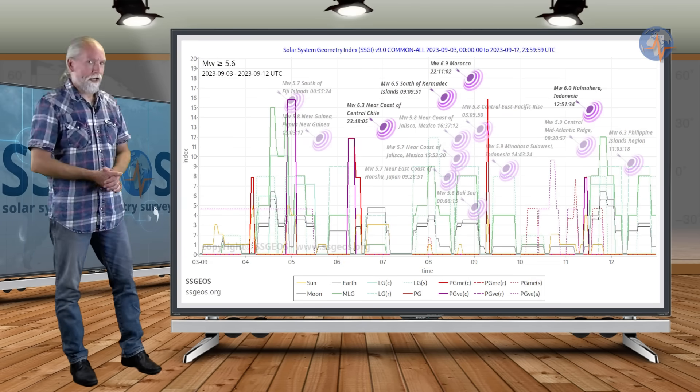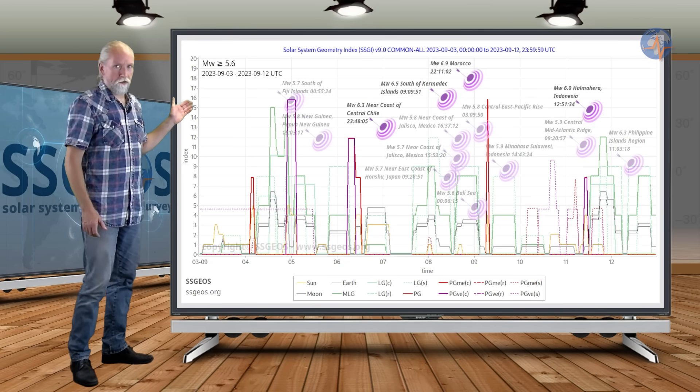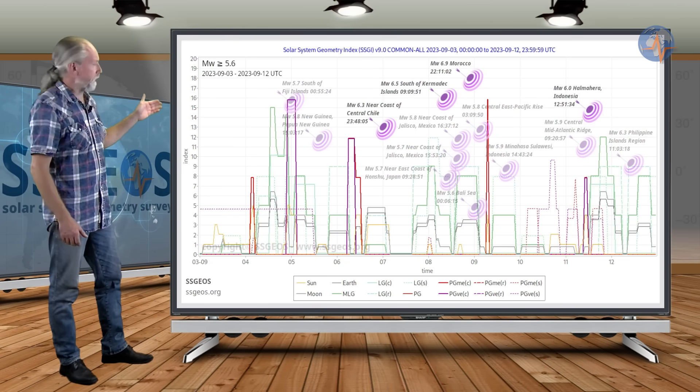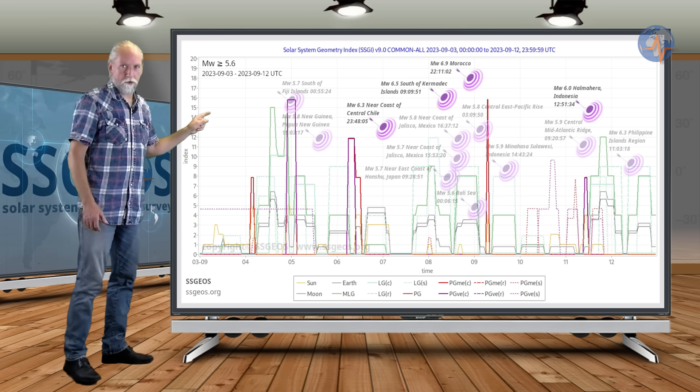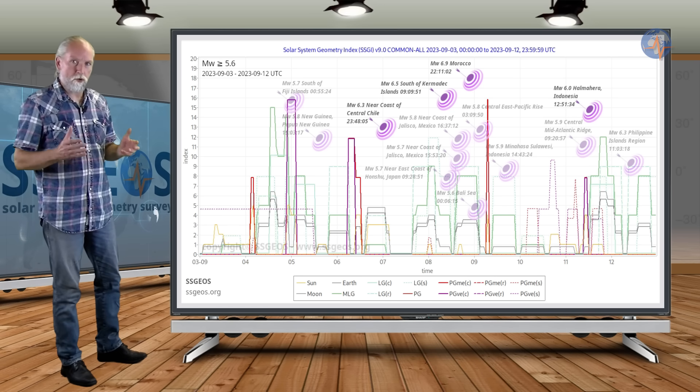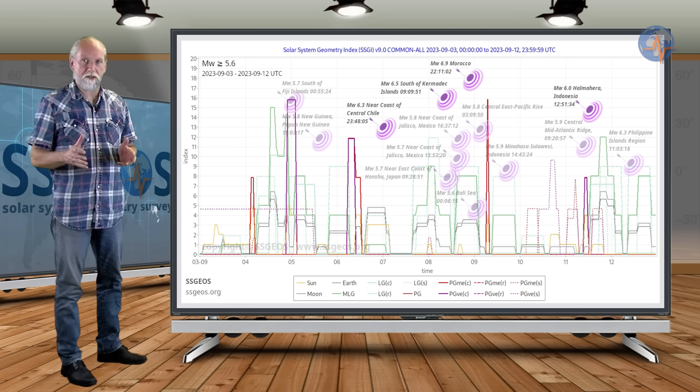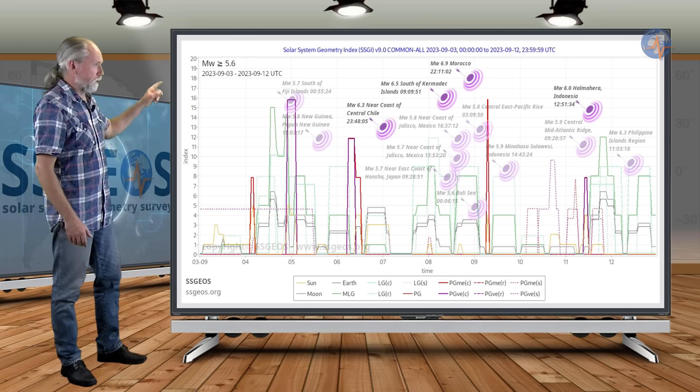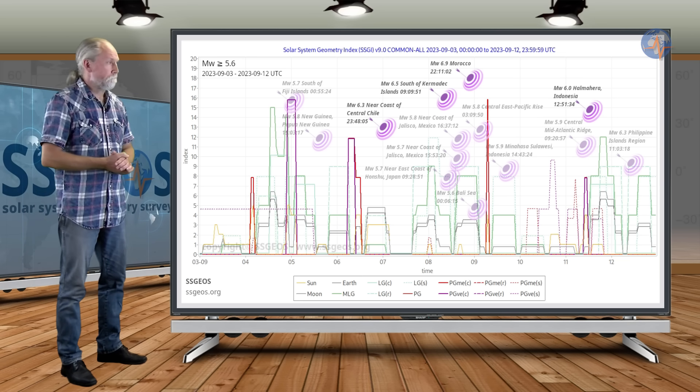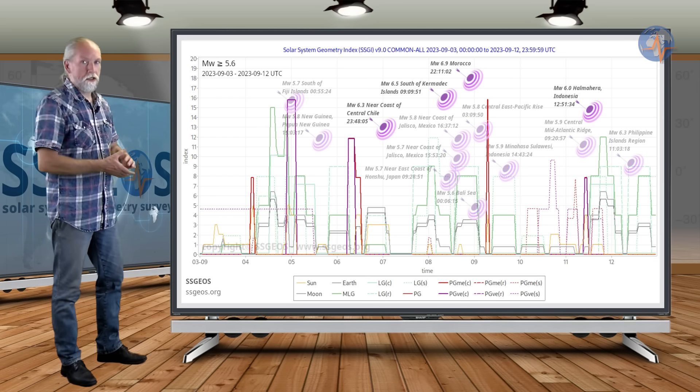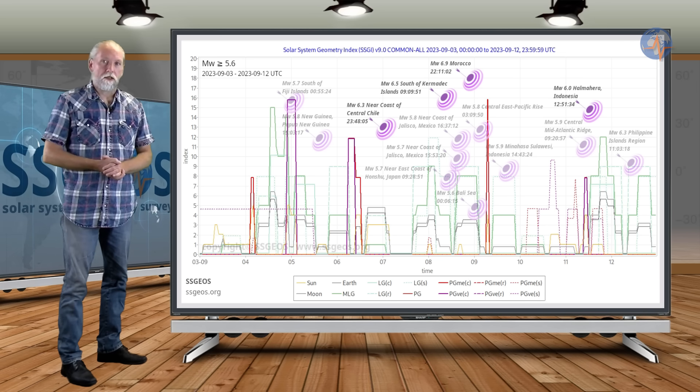If we look at the SSGI graph magnitude 5.6 and larger, we see a huge clustering on 8th September. I estimated that the most critical time would be approximately from 5 to 7th September. We see the huge clustering on 8th September including two six magnitude earthquakes and again unfortunately a deadly earthquake in Morocco.